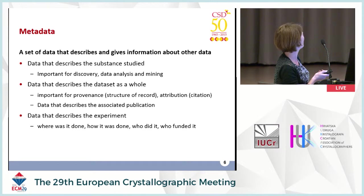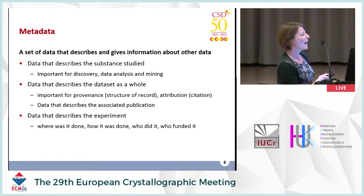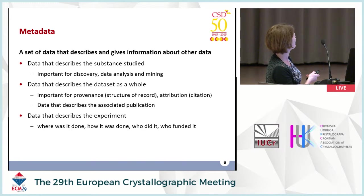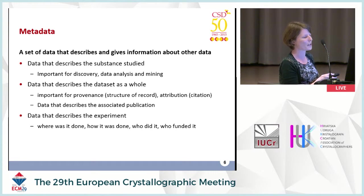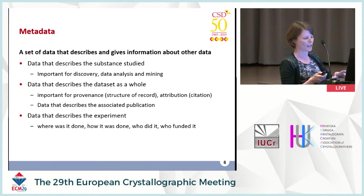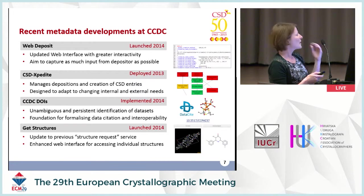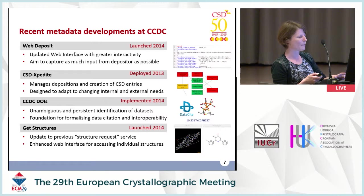My simplistic view of metadata is that it's a set of data that describes and gives information about other data. The data I'm going to focus on this morning is: data that describes the substance studied — important for discovery, analysis, and mining; data that describes the dataset as a whole — important for provenance and attribution; and data that describes the experiment, such as where it was done, how it was done, who did it, and who funded it. I'll look at recent initiatives, changes we've made, and challenges we still face.